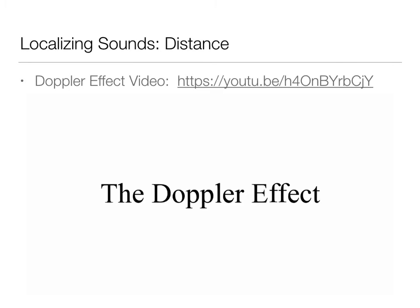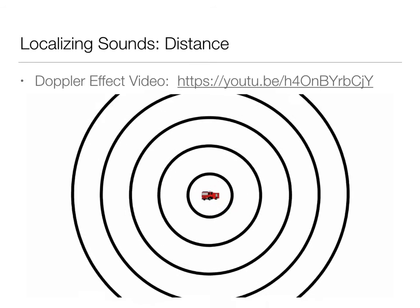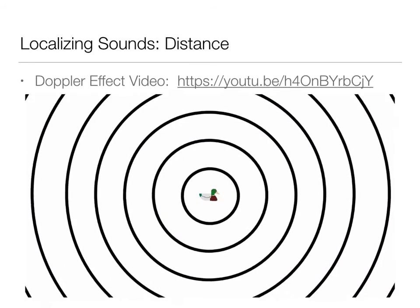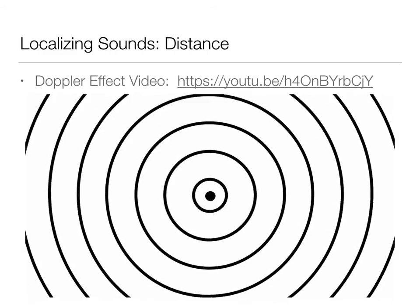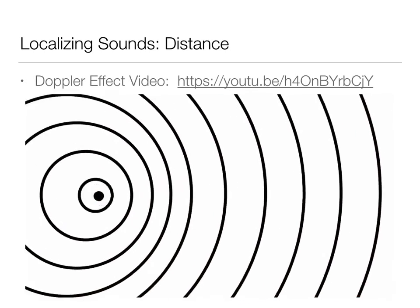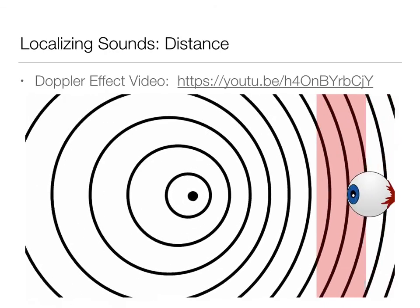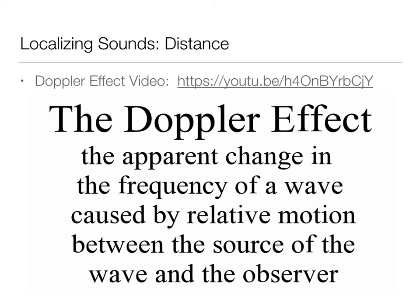The Doppler effect — in Sheldon's words — is the apparent change in the frequency of a wave caused by relative motion between the source of the wave and the observer. Here's a thing emitting waves; it could be a fire truck, a star, or a duck on a pond. When the emitting source moves, wave fronts bunch up in the direction of motion and spread out behind. If the object moves toward a stationary observer, the bunched-up waves are observed at a high frequency; if it moves away, the waves are observed at a lower frequency.